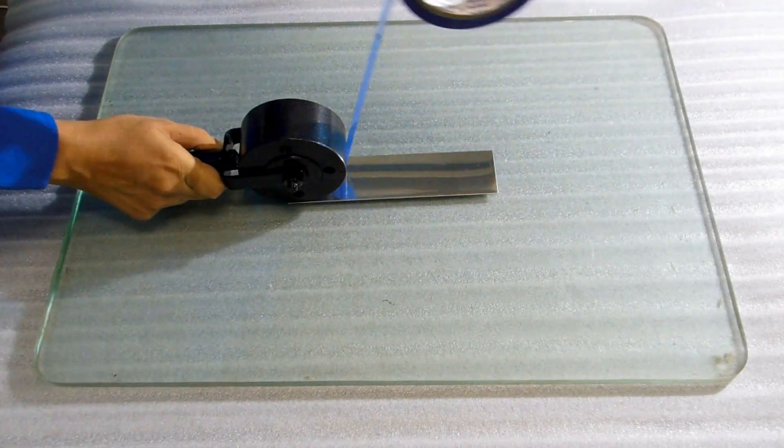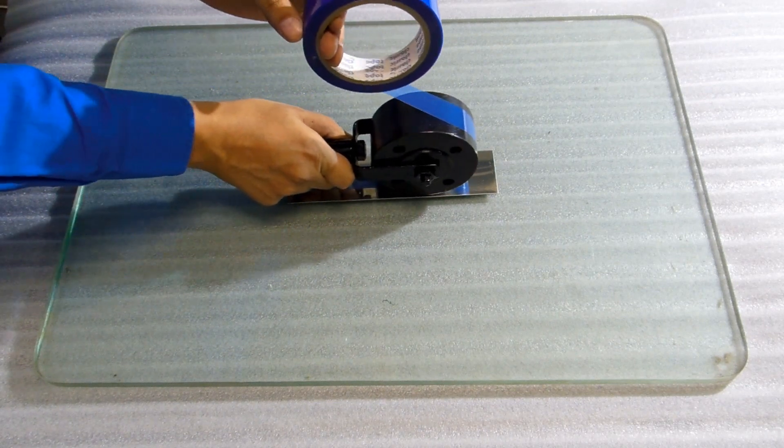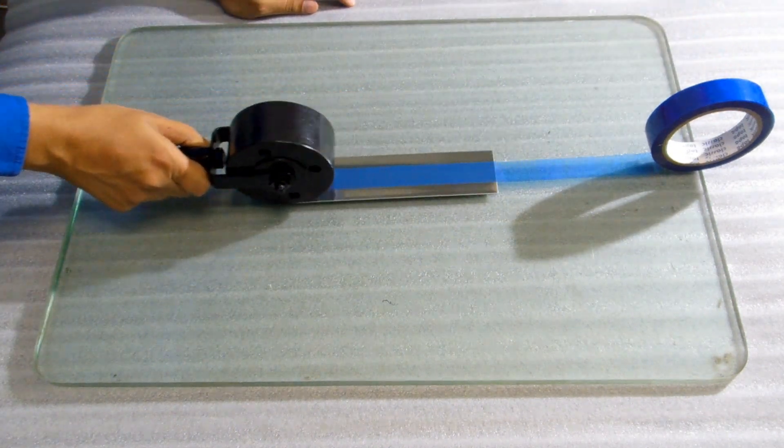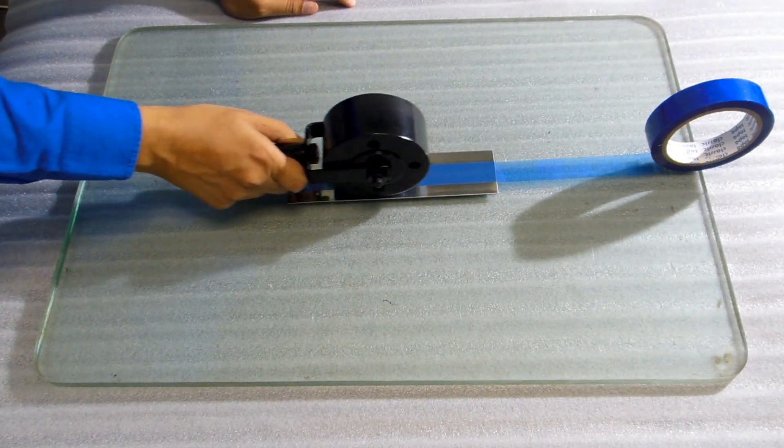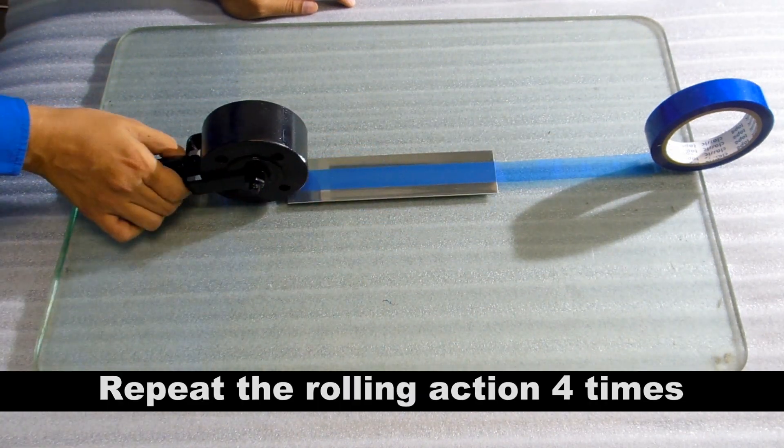Stick the sample to the test panel as shown in the video, use a 4.5 lb rubber roller to roll it 2 times forward and 2 times backward. Use the handle only to guide the roller. Do not apply any additional pressure with your hand.